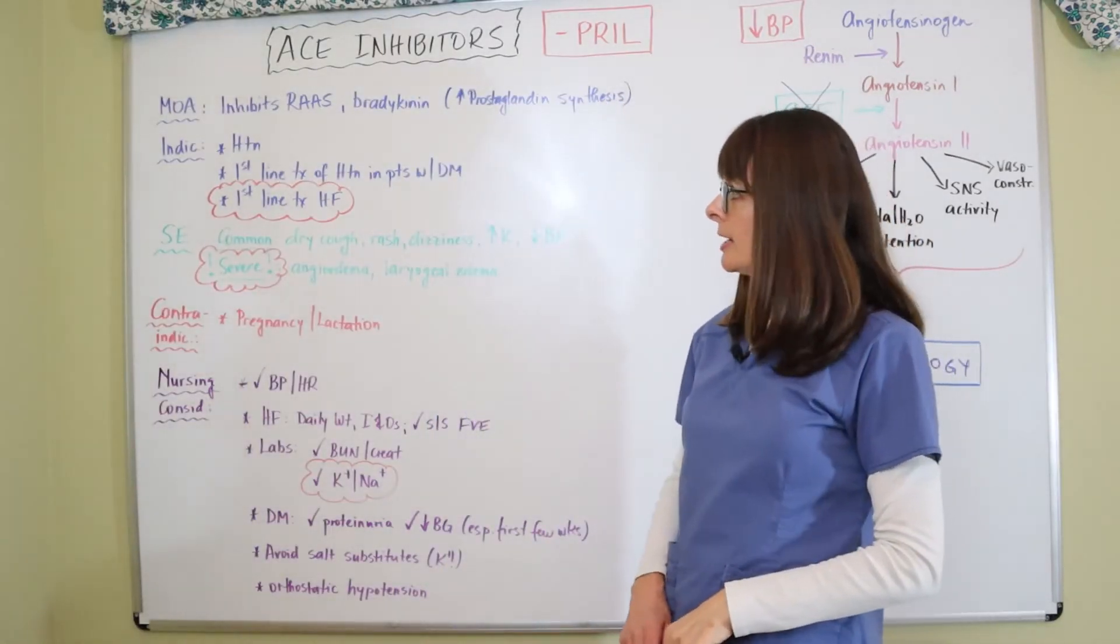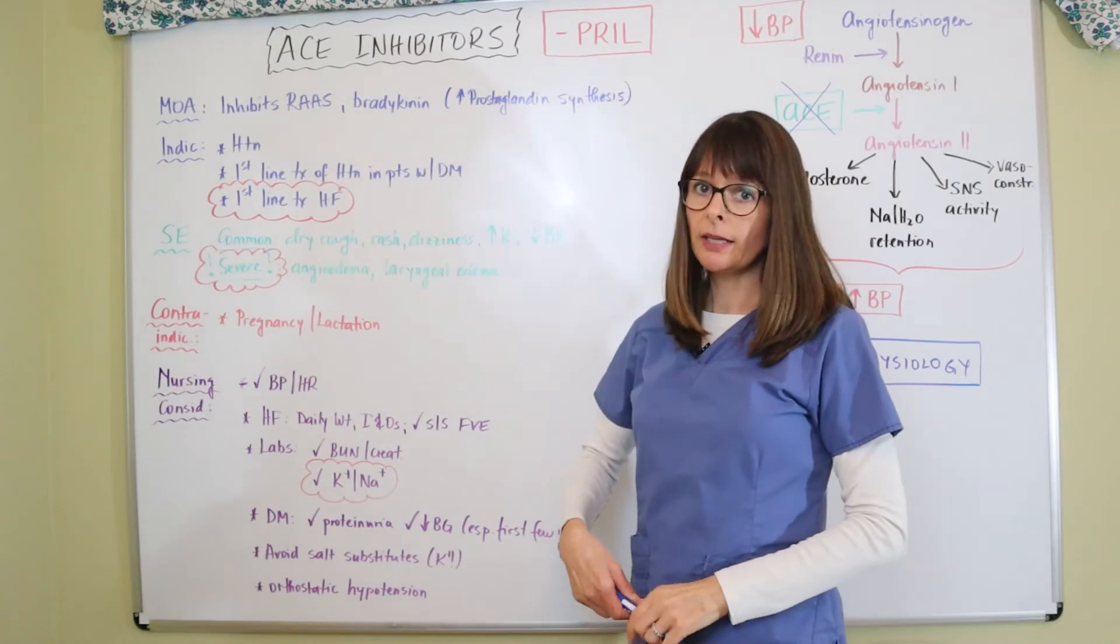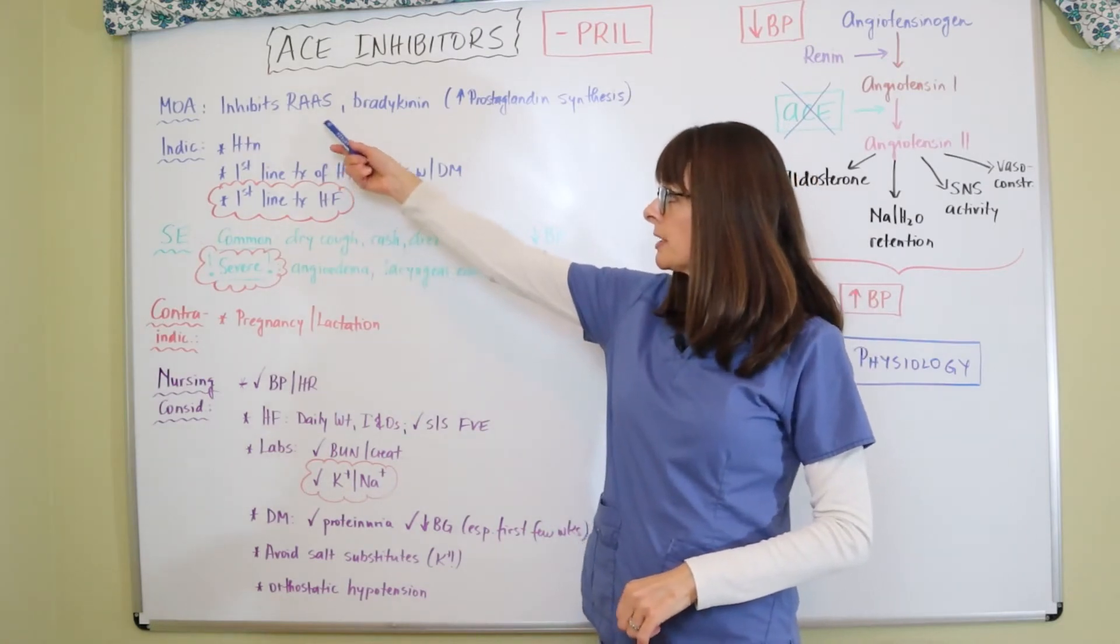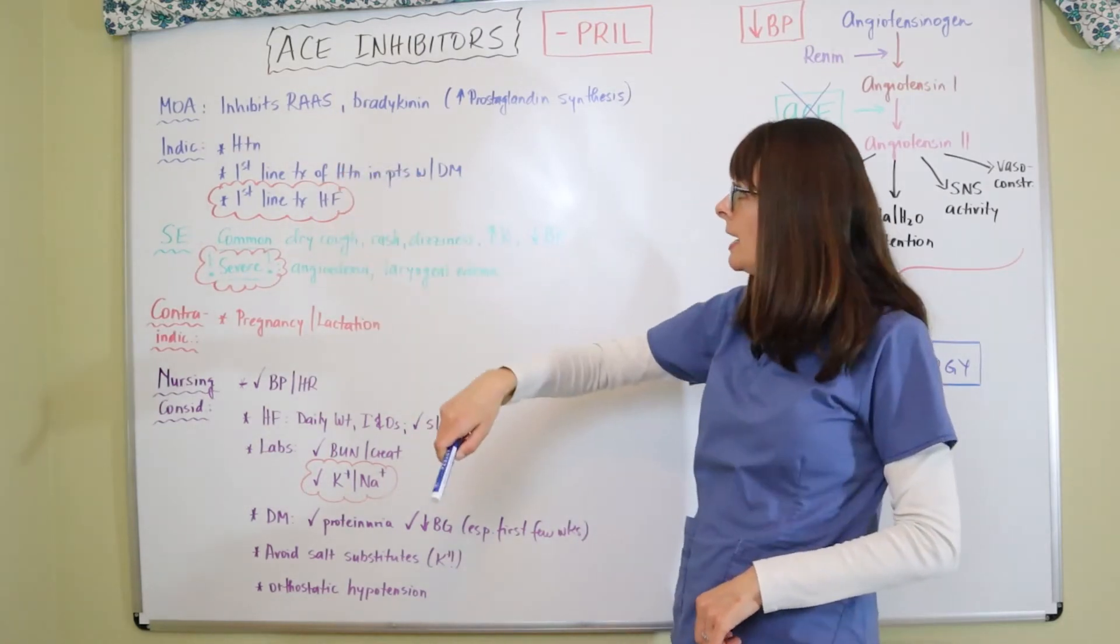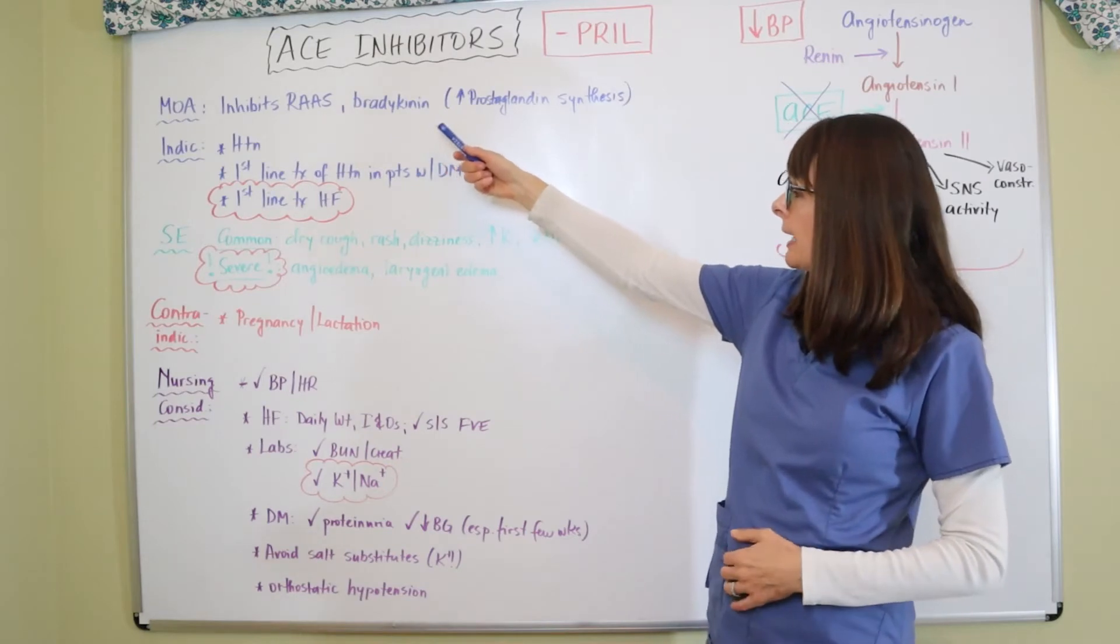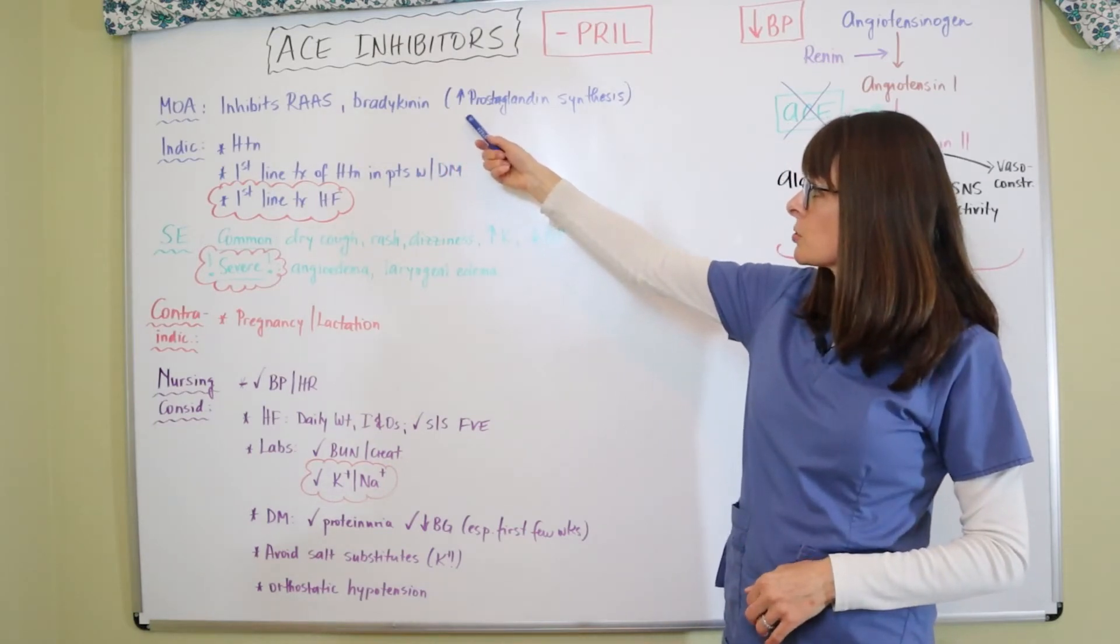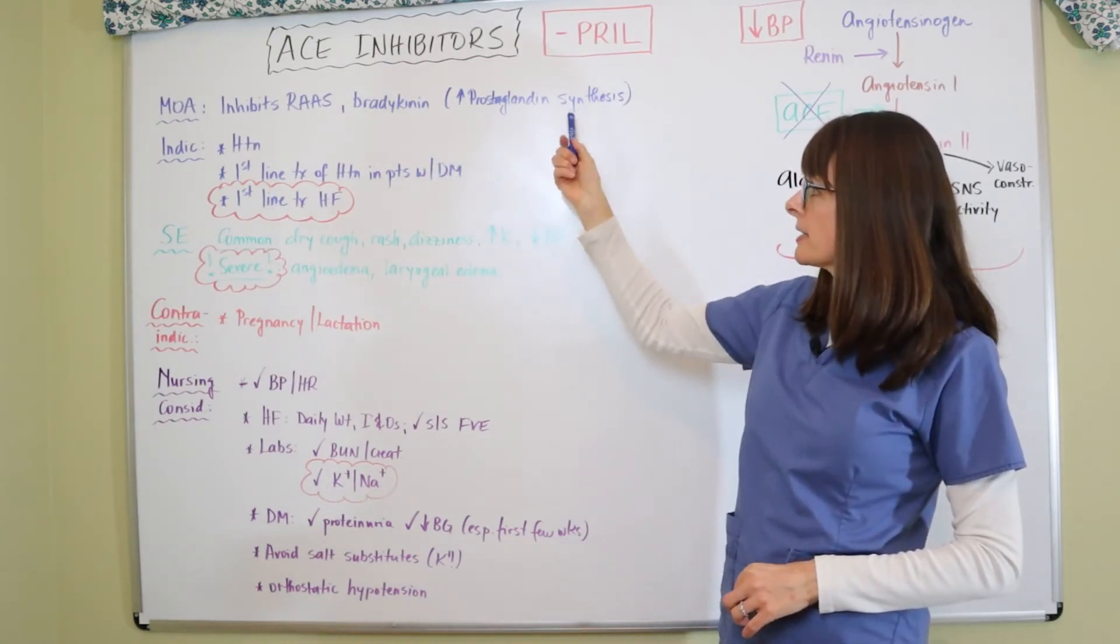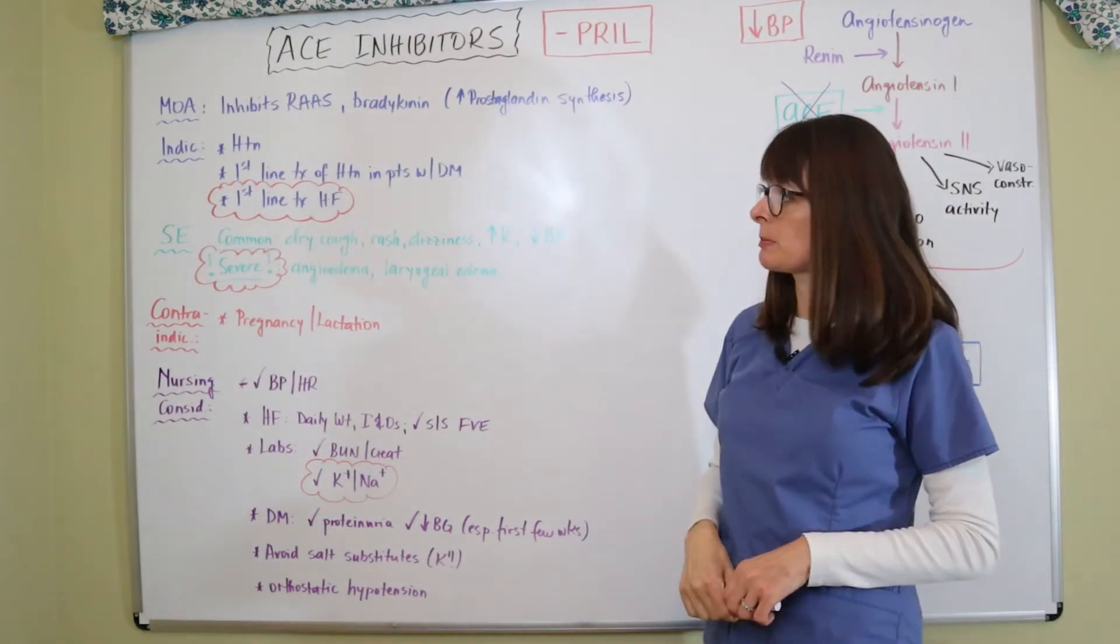So now for ACE inhibitors, the mechanism of action: they inhibit the renin, angiotensin, and aldosterone system, but they also inhibit bradykinin, which then helps us to increase the prostaglandin synthesis, which also helps to decrease blood pressure.